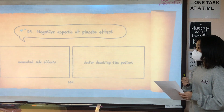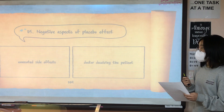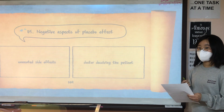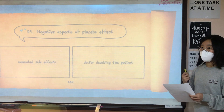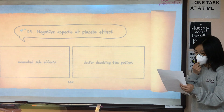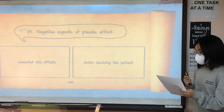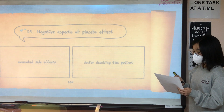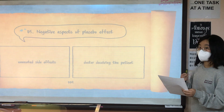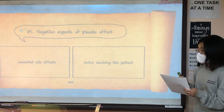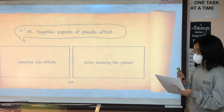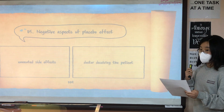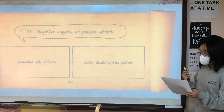The last topic is the negative aspects of the placebo effect. The first is unwanted side effects. As mentioned earlier, the nocebo effect is the opposite of the placebo effect. A nocebo effect can occur if a person takes a real or active medicine, and also can occur if they are given a placebo, which is a fake medicine. An example of this is electromagnetic hypersensitivity, which is the fear of electromagnetic fields damaging the body.